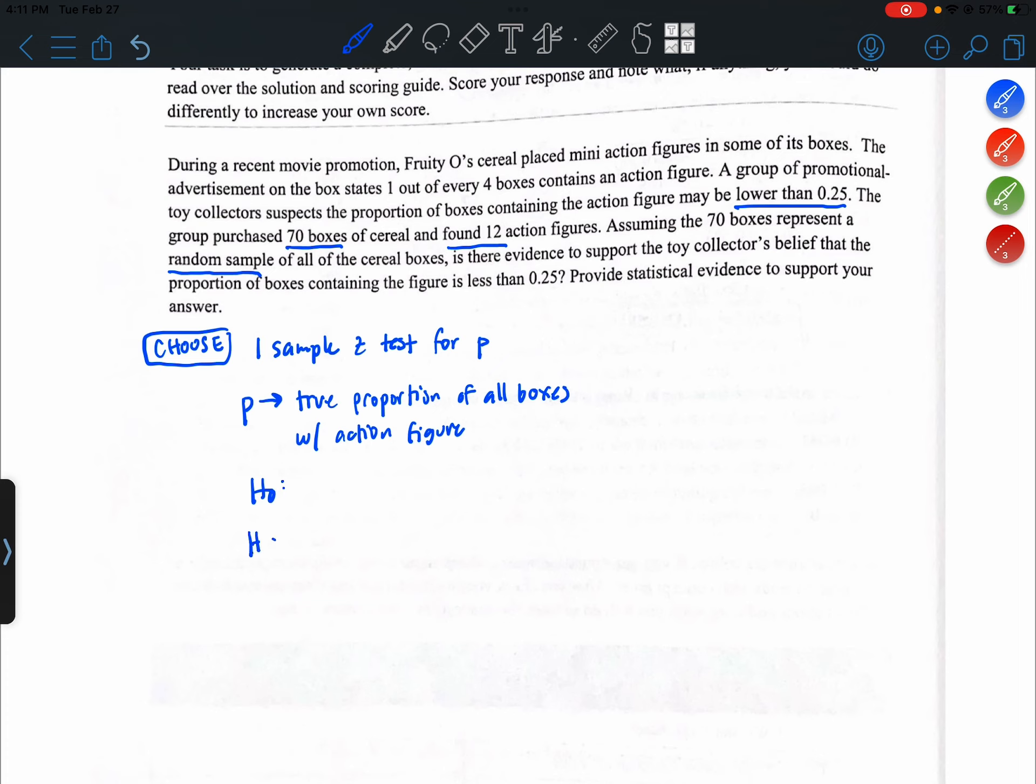Our hypothesis. So the null hypothesis is that our parameter is equal to the null value, which is 0.25. The alternative hypothesis aligns with the suspicion, which is that P is less than 0.25. Our significance level - it does not tell us what significance level to use, so I'm just going to use the standard 5%.